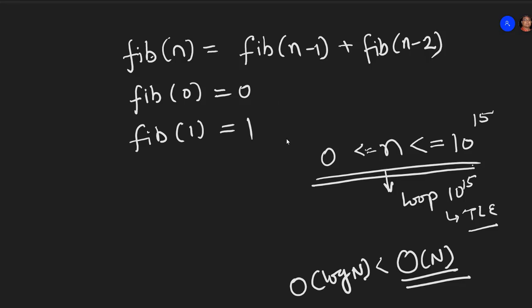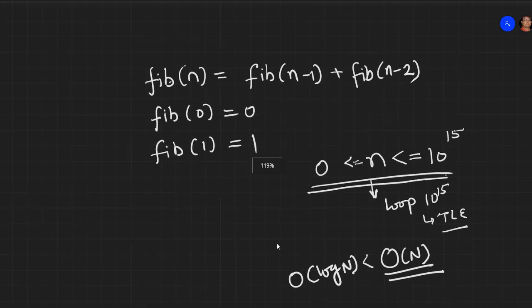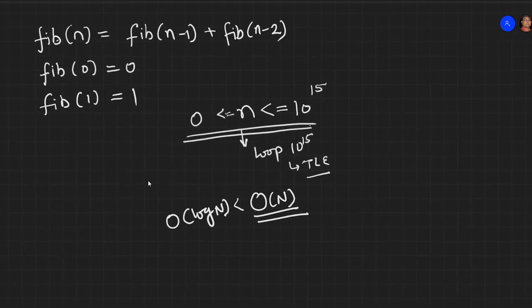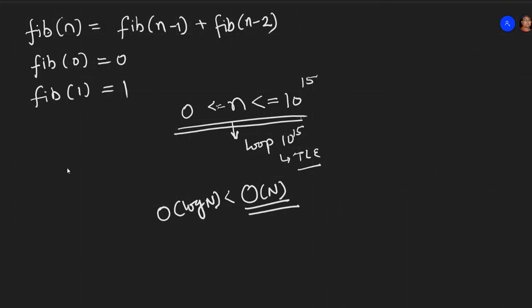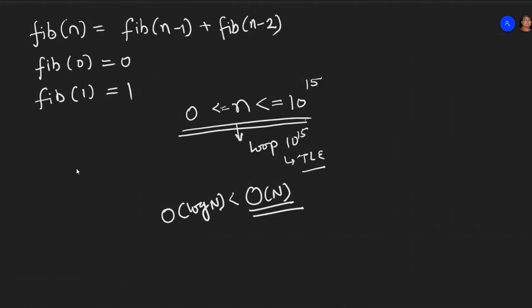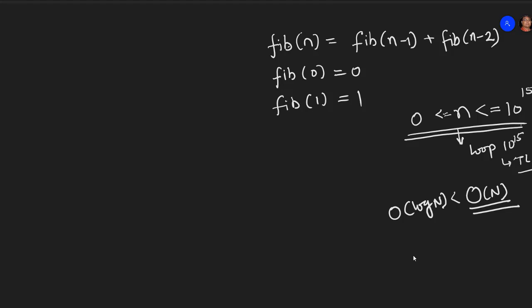So we have learnt a way how we calculate the matrix power in log n time. Let's try to see how we can utilize that concept to solve this problem. So if I say I know that nth Fibonacci number, I will just write it as fn, is equal to n minus 1 and n minus 2.